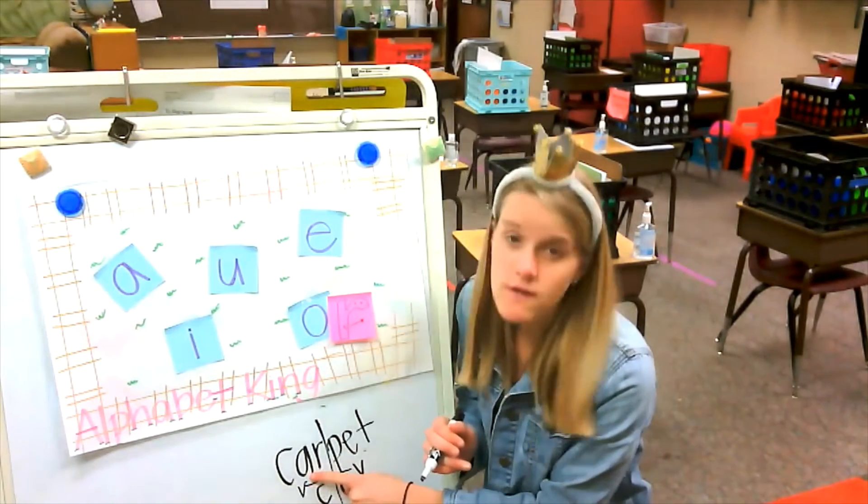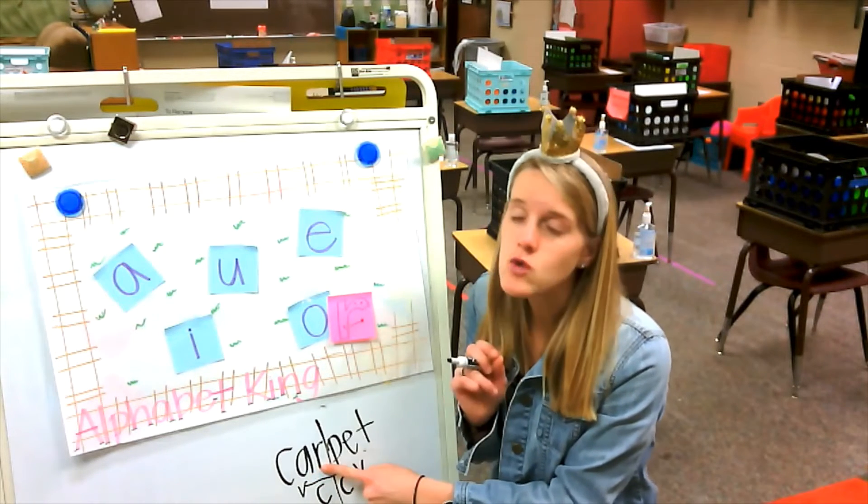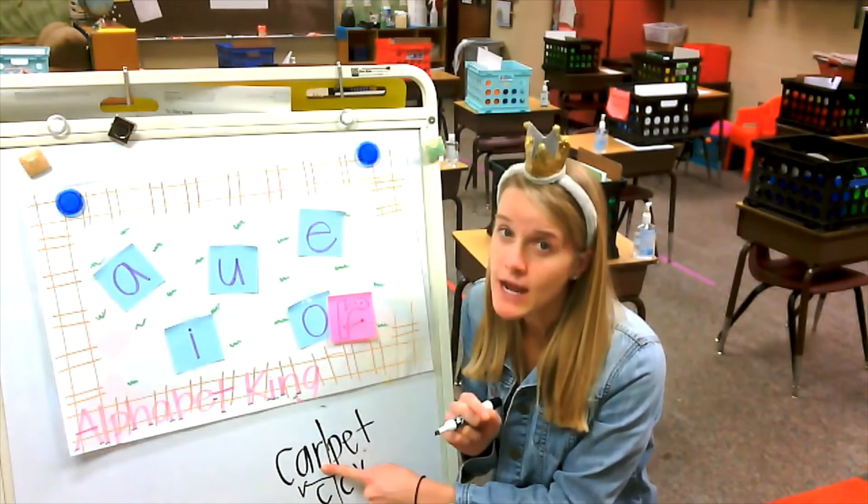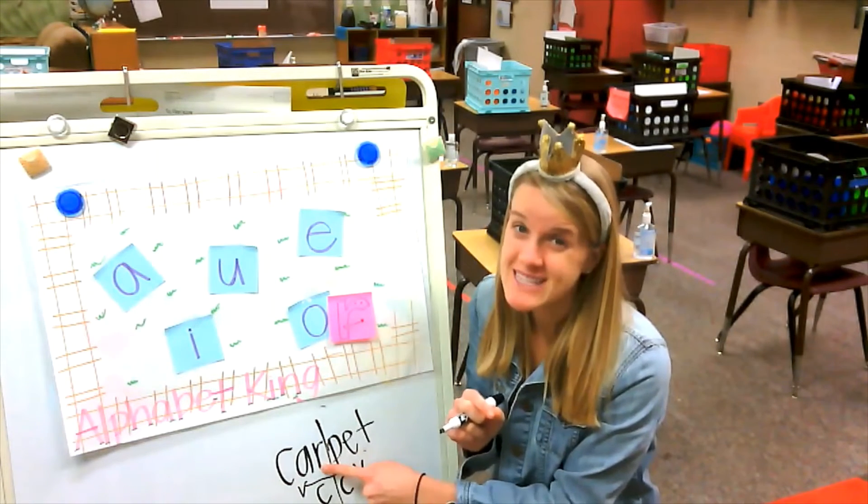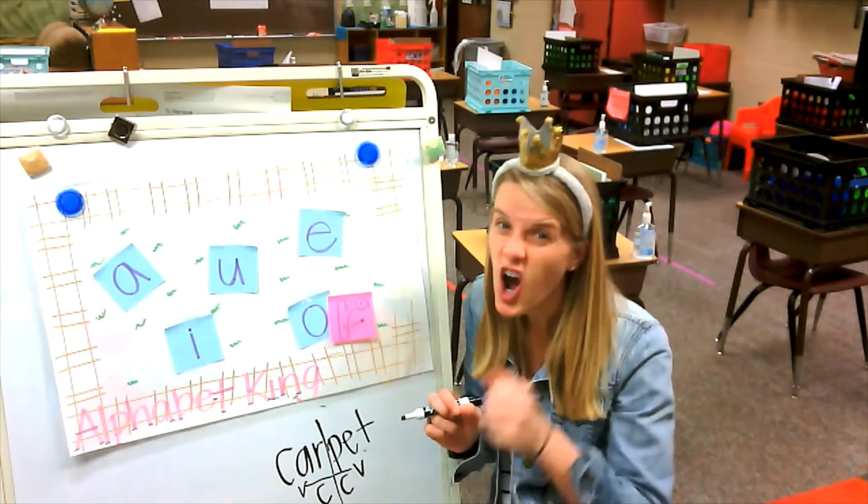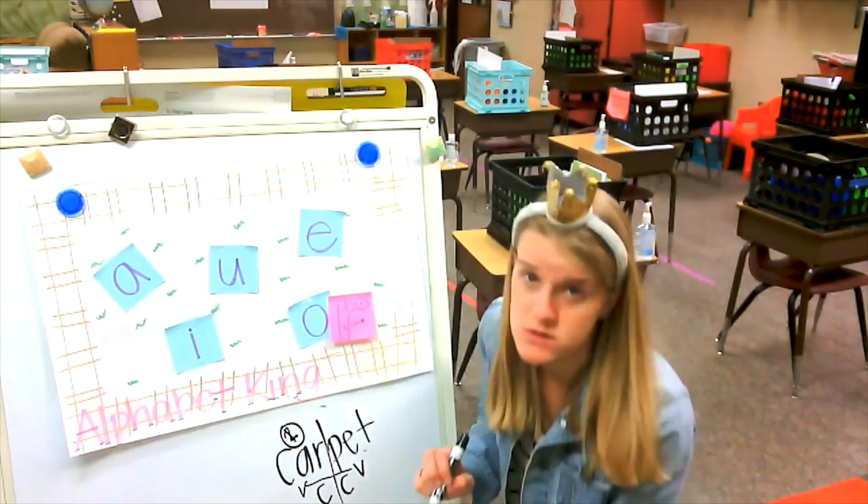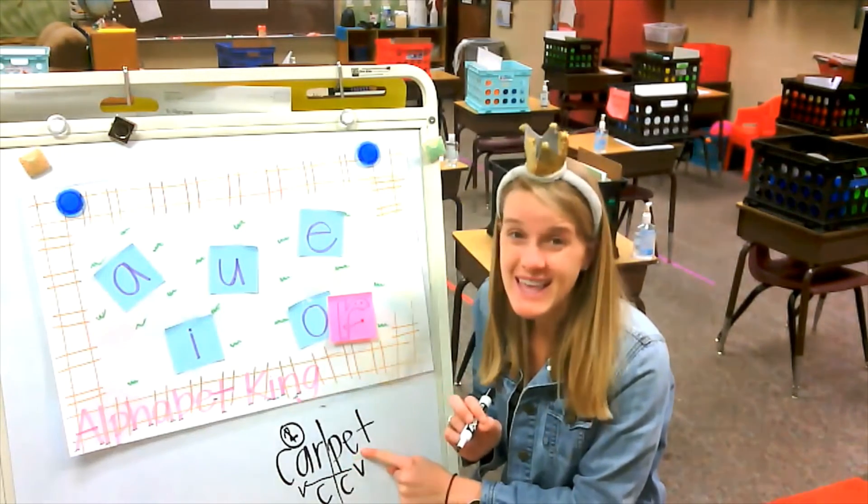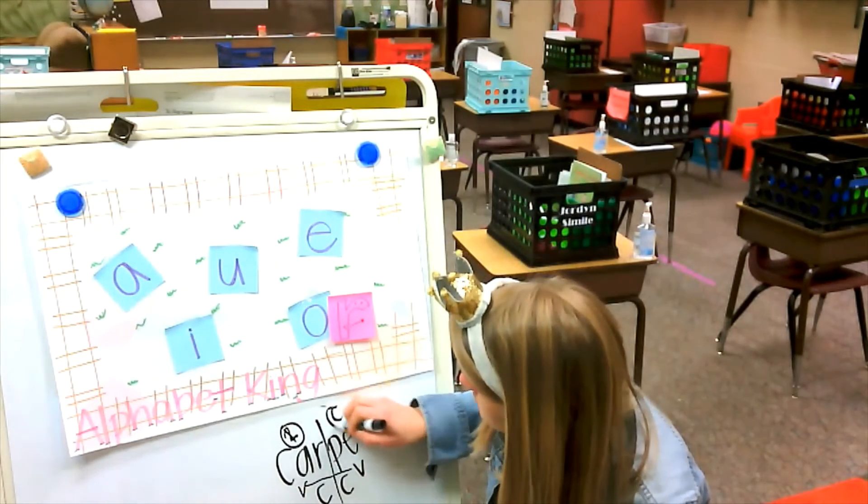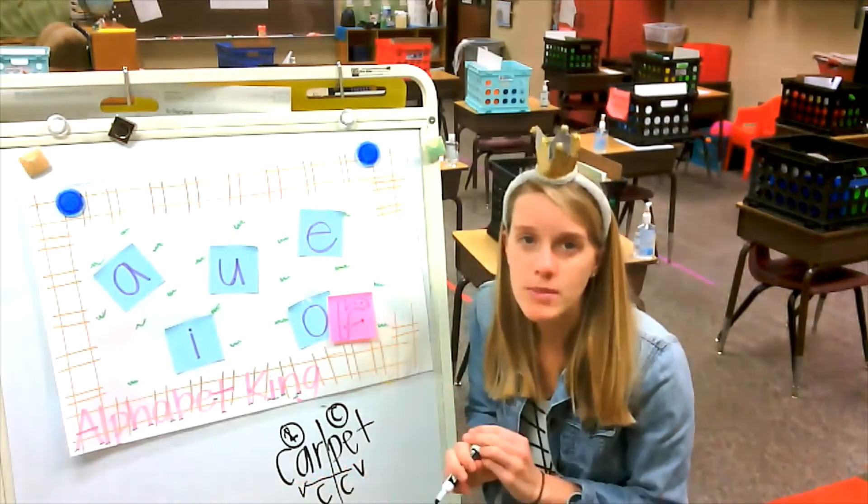If we look at our first vowel, we see that there's an R behind my A. Now you immediately need to recognize that that's that silly bossy R, because it's not closed in. It's actually bossy R, and that AR is going to say ar. So we're going to say that's R-controlled. If I look at E, behind E is just T, so that is a closed syllable. If I read this together, we have car-pet, carpet.